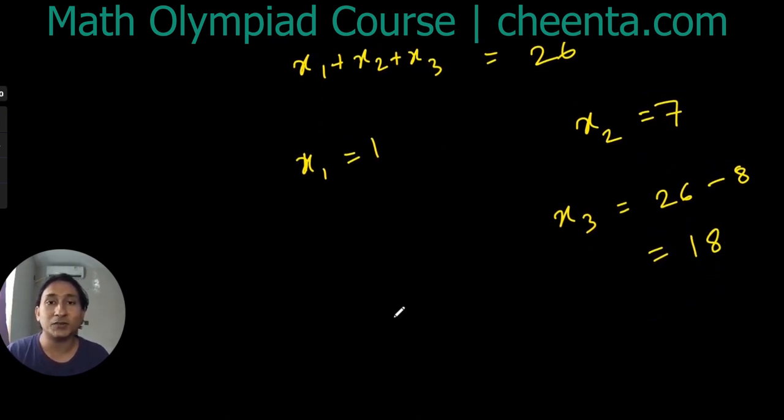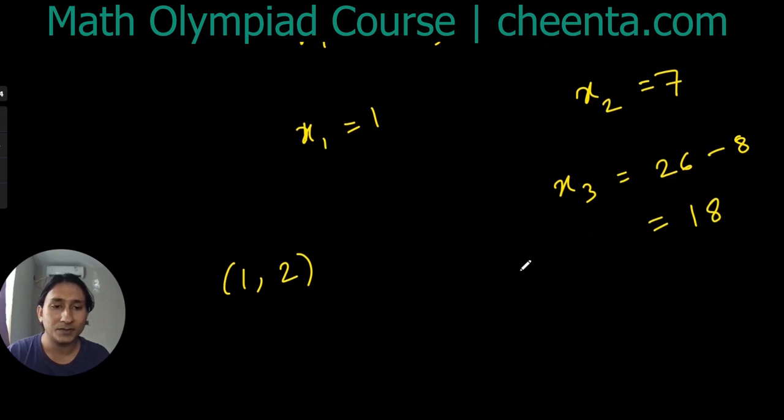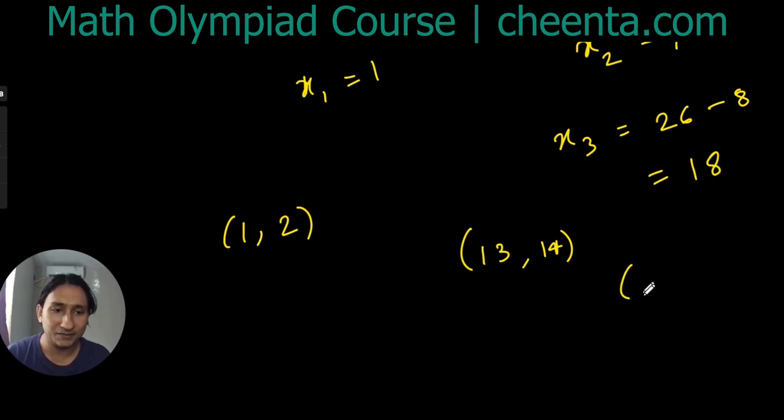Then x₂ = say 7, and x₃ has to be 26 - 8 = 18. So what are the numbers on the pages that have been removed? They are 1, 2, 13, 14, and 17, 36.